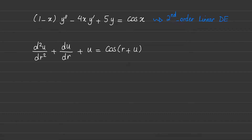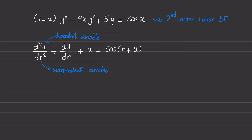This is the second differential equation, where u — since it is in the numerator — is the dependent variable, and r — since it is in the denominator — is the independent variable. We want to find the linearity of this differential equation with respect to r.